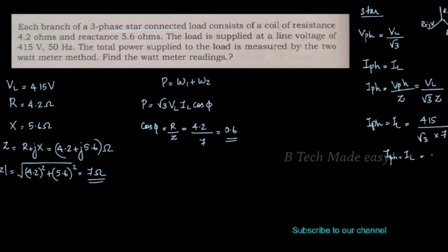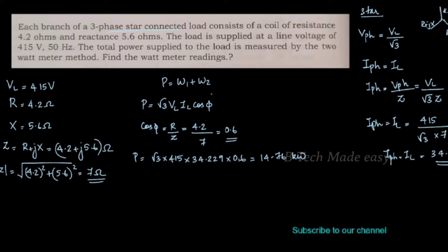IPH is equal to IL, which equals 34.229 amperes — corrected to 14.76 amperes. So IPH equals IL equals 14.76 amperes.